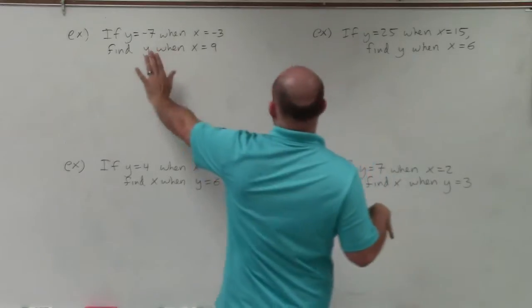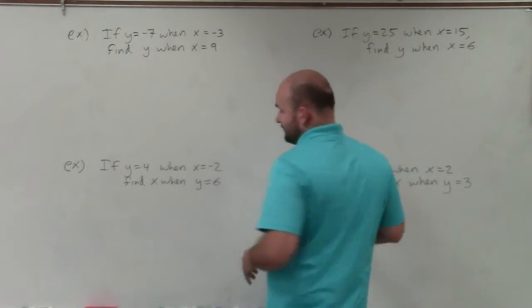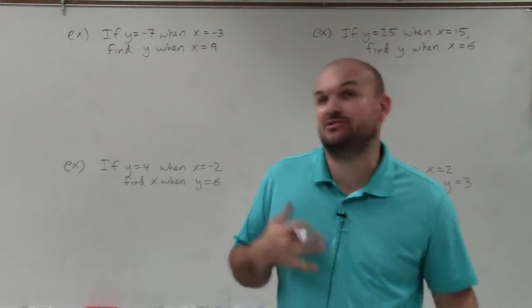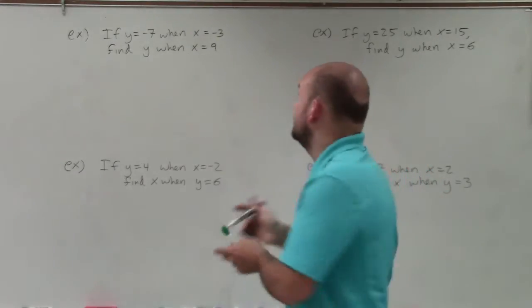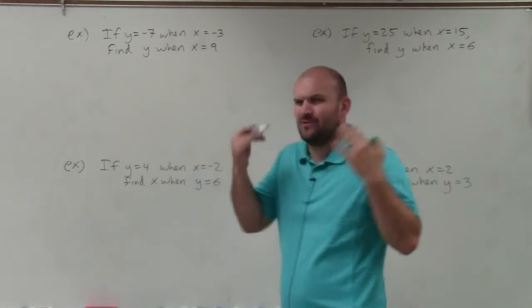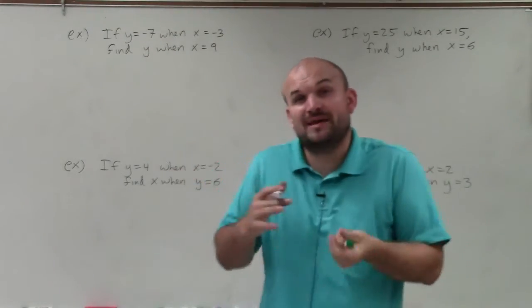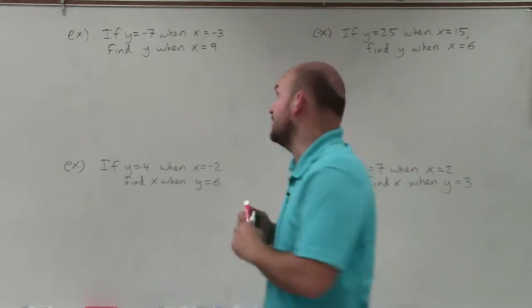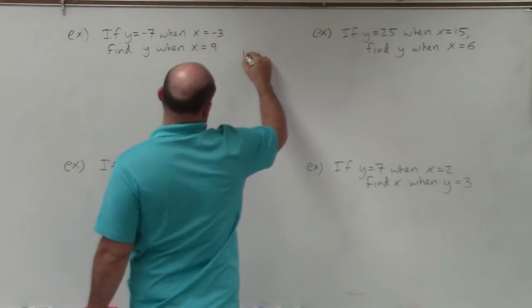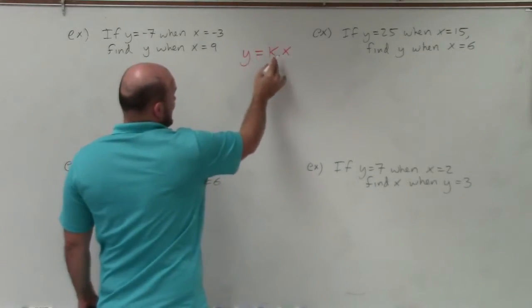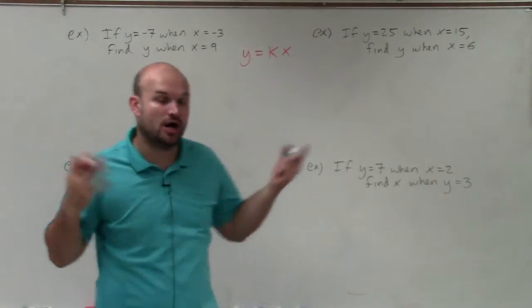We're going to try to find y, and then try to find x. What's important about all these problems is they're telling us that y varies directly with x. What does varies directly mean? It means we can write it in direct variation form: y equals kx, where k is our constant.